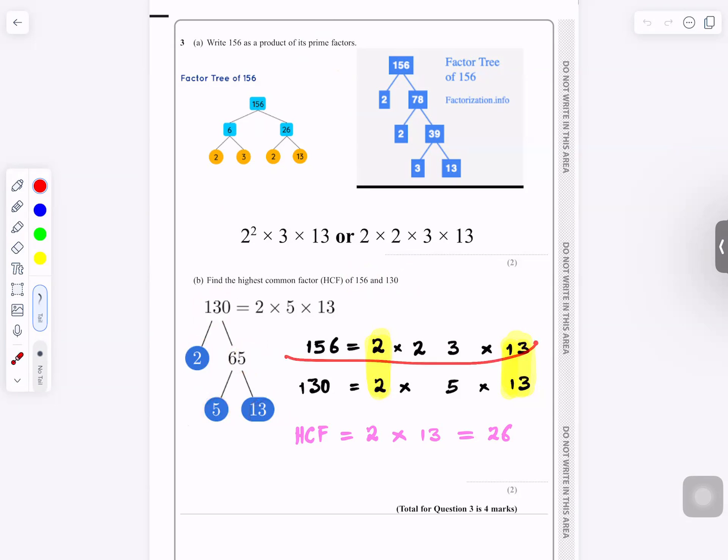So you list the 156 prime factors and list the 130 prime factors. The ones in yellow are the ones that are common. 2 is common in both of them. You write that. 13 is common. You write that. You multiply. 2 times 13 gives you 26.